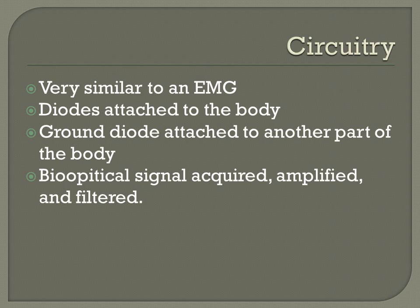The circuitry for an EOG is very similar to that of the EMG that we built in the lab. Diodes are attached to the body, and a ground diode is attached to another part of the body, away from the input diodes. The bio-optical signal is acquired, amplified, and filtered.